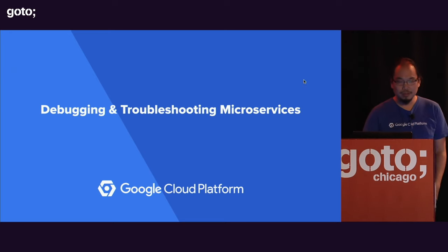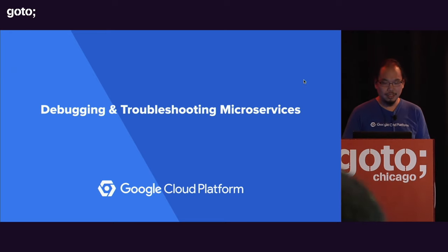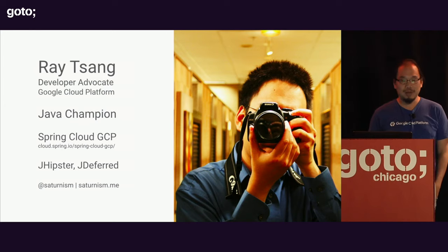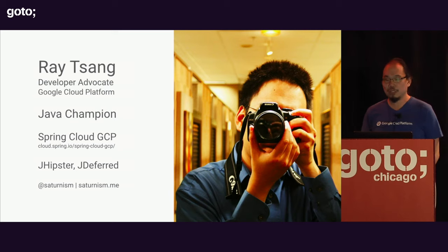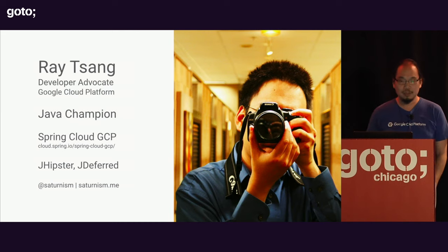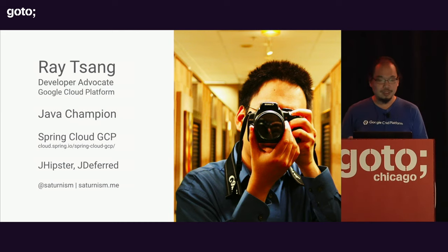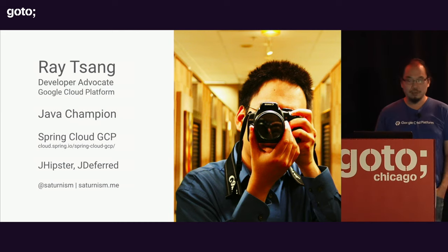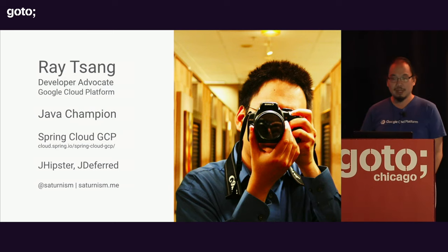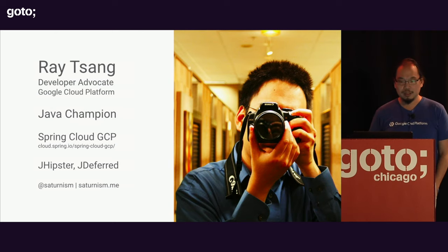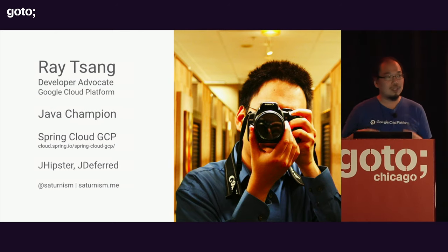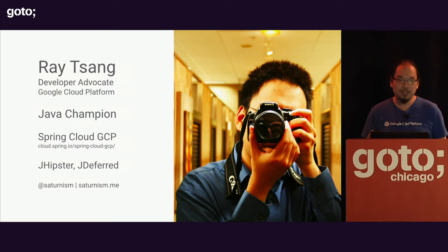All right, let's get started. Thanks everyone for being here, one of the second to last sessions of the day. My name is Ray, I'm a developer advocate for Google Cloud Platform. There are two things I like to do: one is to bring some of the best technology that developers can use on Google Cloud or in open source projects, like Kubernetes and Istio, to developers — especially Java developers. I love Java. I've been in the industry for almost 15 years.